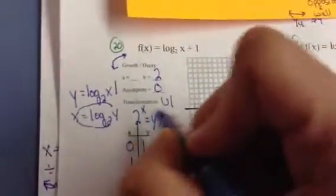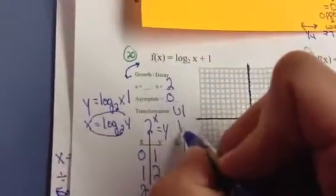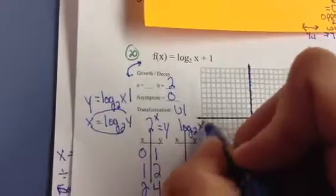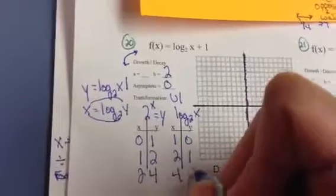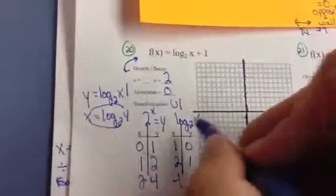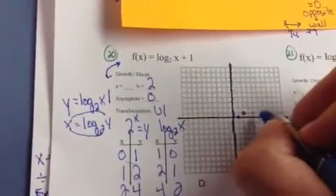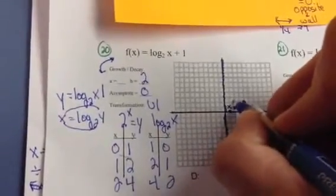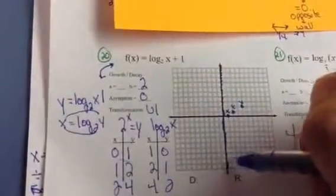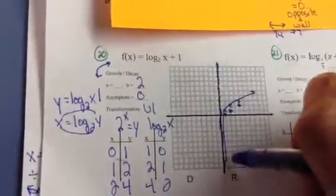These are the points for the exponent. I need the points for the log, so I use the second T-chart — the points just switch. If I inverse them back, I get the points of the original: 1,0 then 2,1 and 4,2. I'll graph those, and then they're all just going to move up 1. Then the shape is a lowercase r.